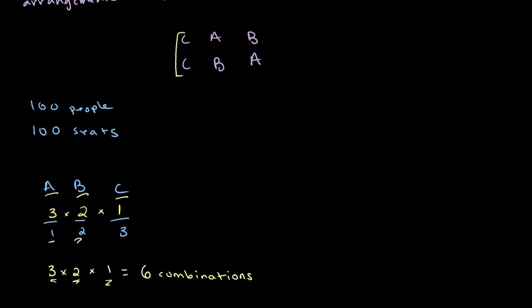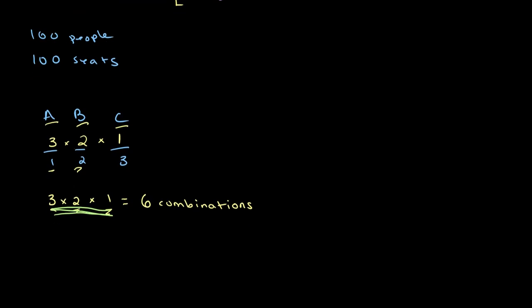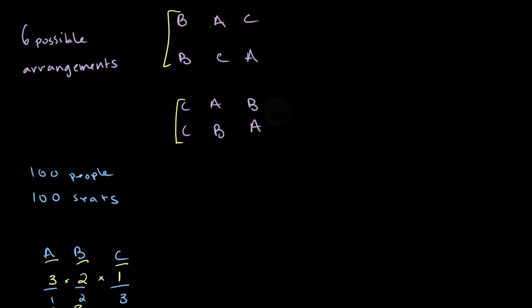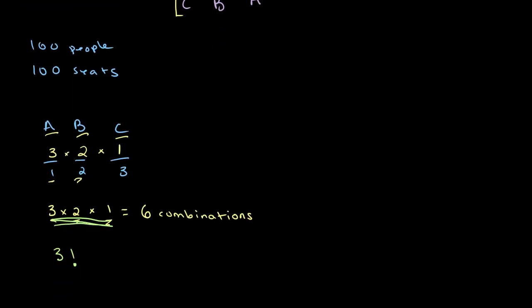Something you may notice when looking at this equation is that it looks an awful lot like three factorial. So when we have three seats and three people, there are three factorial possible combinations in which we can arrange them.